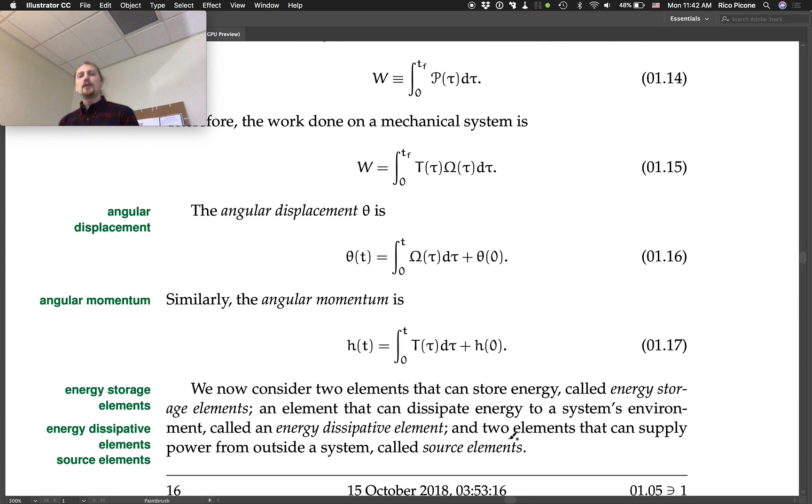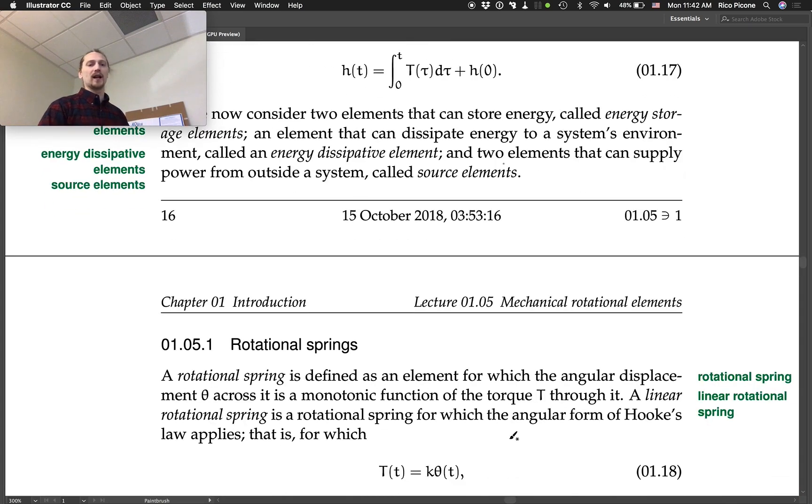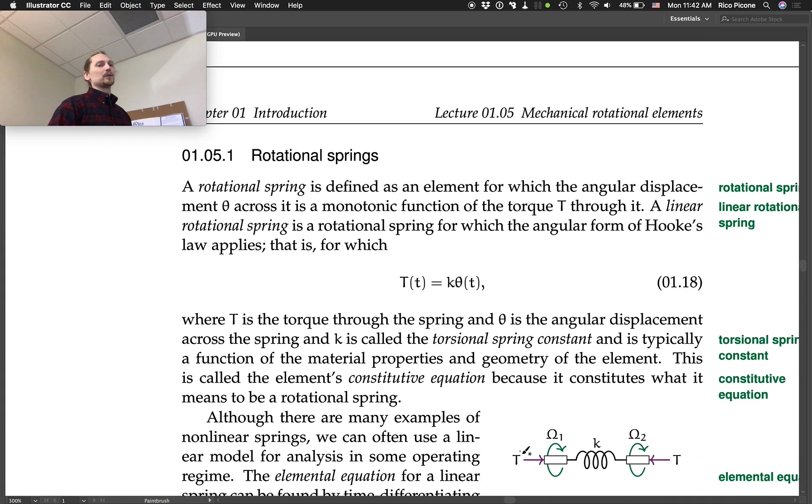We now consider two elements that can store energy called energy storage elements. An element that can dissipate energy to a system's environment called energy dissipative element. And finally, two elements that can supply power from outside a system called source elements. So we'll start with springs again, but this time rotational springs.